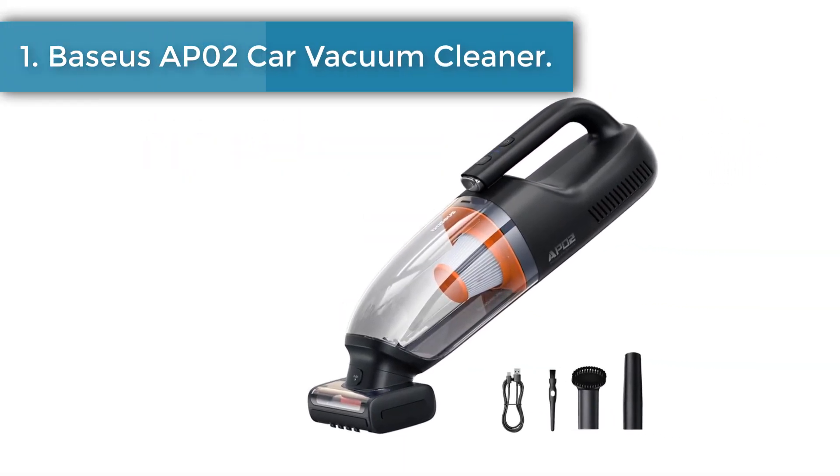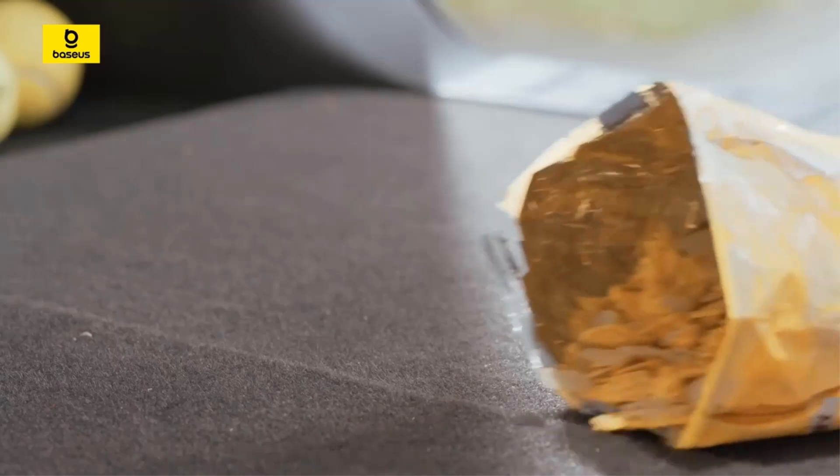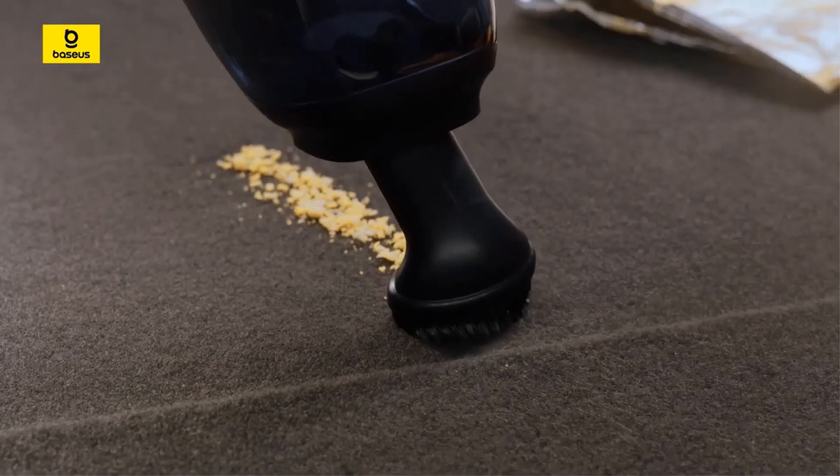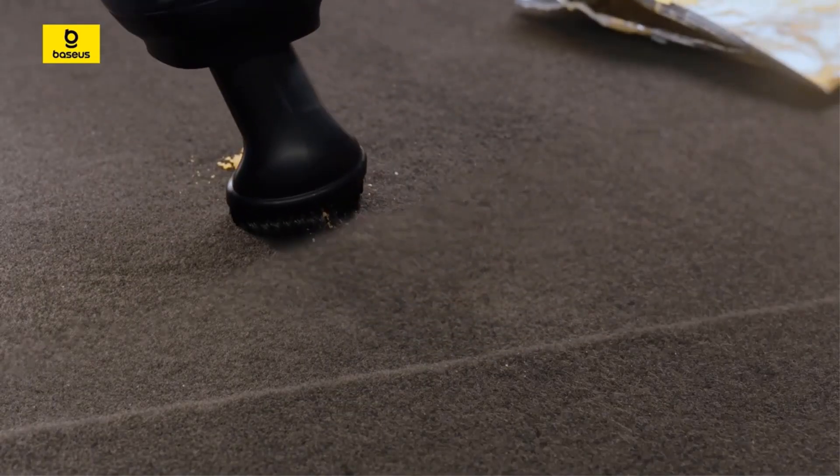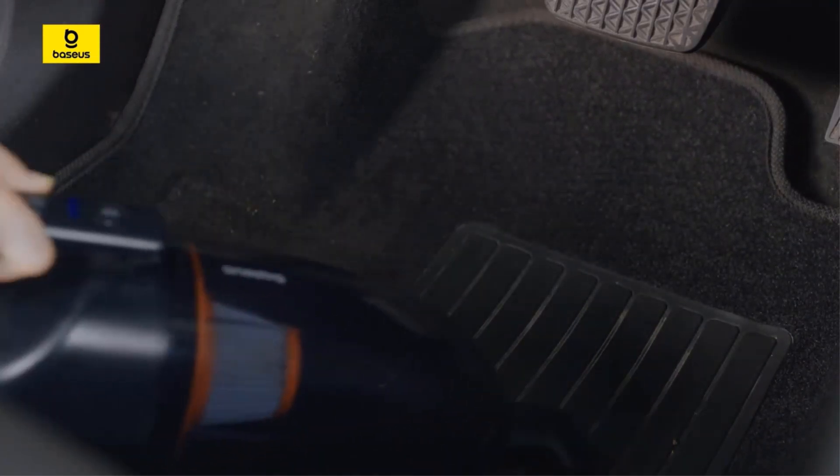If the suction continues to weaken, the cleaning effect may be affected. Inadequate cleaning will leave fine dust and allergens which will affect the clean home environment. Baseus AP02 car home vacuum cleaner is equipped with powerful roller brush which has continuous strong suction, ensuring long-lasting and excellent vacuuming performance and avoiding inefficient cleaning.